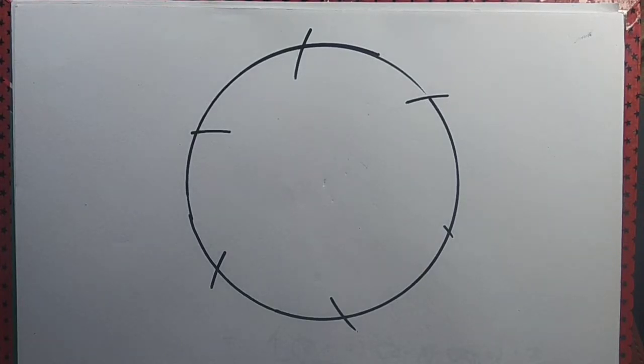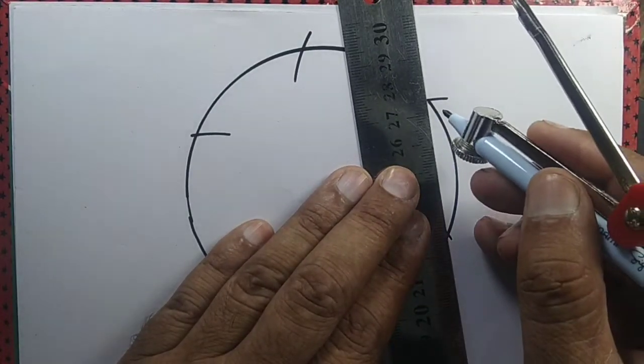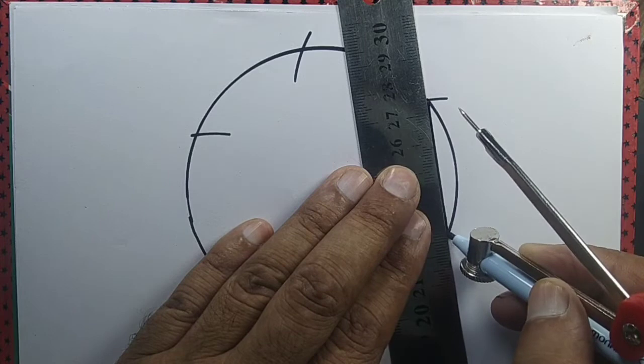Let us join the intersection points of the arcs and the circle. So we got one side.